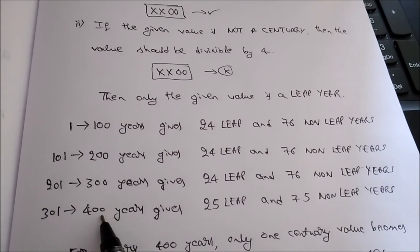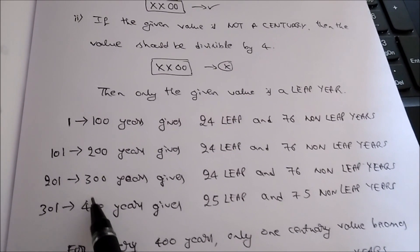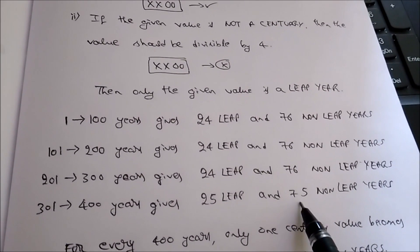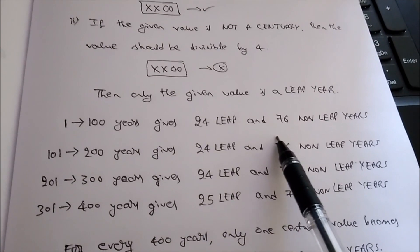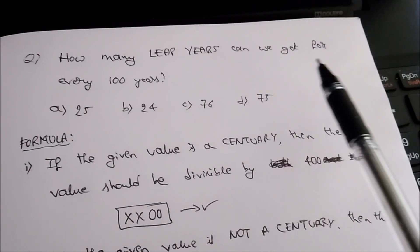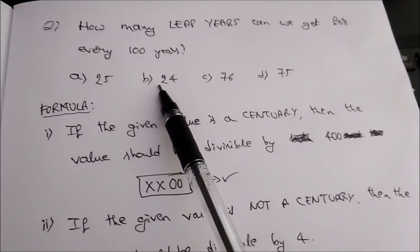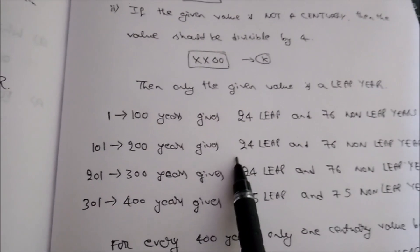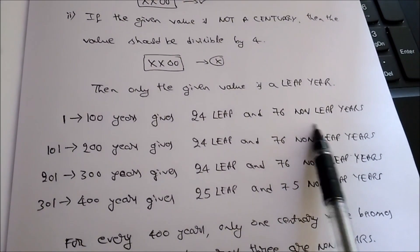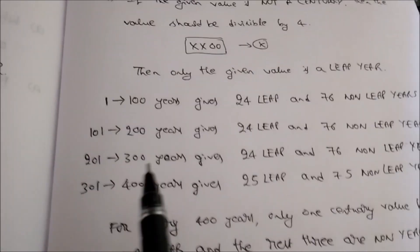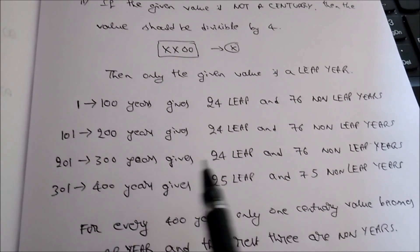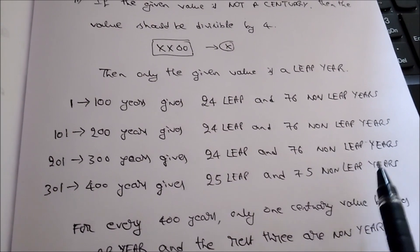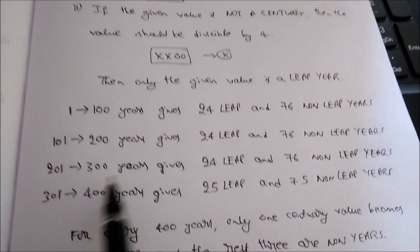For every 400 years, there is only one century that gives 25 leap years and 75 non-leap years. For the rest of the centuries, there will be 24 leap years and 76 non-leap years. So in general, if anyone asks how many leap years we get for every 100 years, simply say 24, because in the majority of cases we get 24 leap years and 76 non-leap years. If they particularly ask from 301 to 400 years, then clearly say there are 25 leap years and 75 non-leap years, because the century value 400 is a leap year.